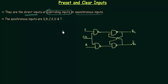I will tell you how they are changing the outputs, but before that let me tell you what are the asynchronous and synchronous inputs. Asynchronous inputs are preset and clear, whereas synchronous inputs are S, R, J, K, D, and T. You have to keep this in your mind.